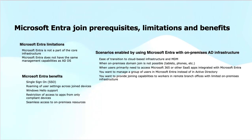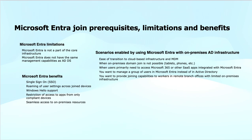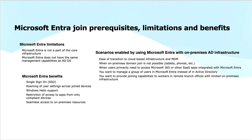For more details, I recommend visiting the first video of this series on learning path one on managing identities in Microsoft Entra ID. Microsoft Entra benefits include single sign-on for business-to-business collaboration — using a single identity you can access applications from different resource providers, multiple SaaS applications, and enterprise applications. It also supports roaming of user settings across joined devices, Windows Hello support for biometric authentication, and restriction of access to apps from only compliant devices. We can also have seamless access to on-prem resources. Windows Hello enables passwordless authentication, which is considered the most secure method of authentication today.